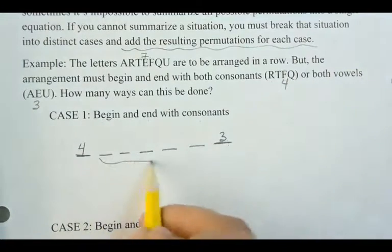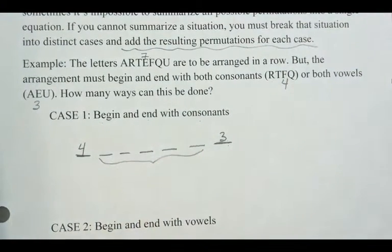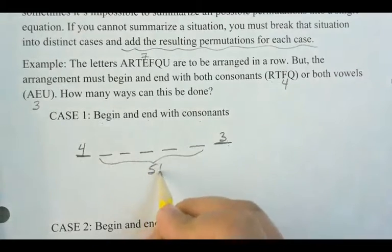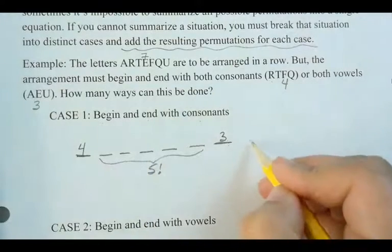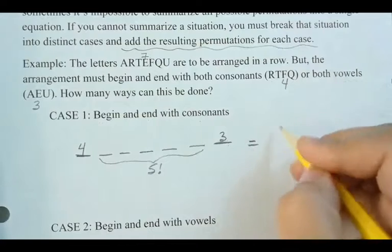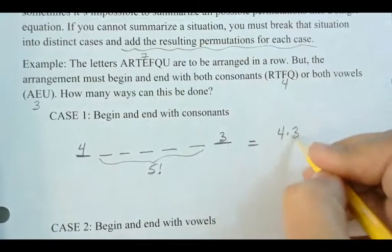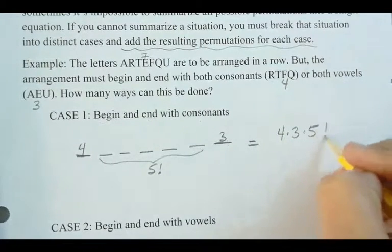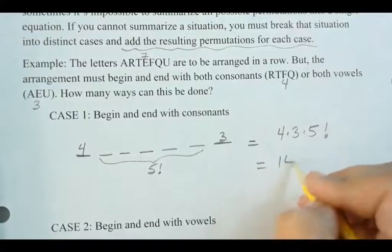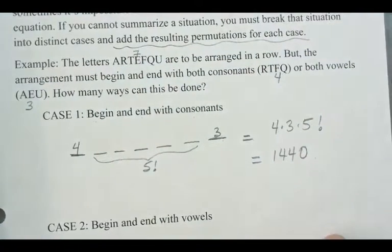Now, what is left for the middle here? There's five different letters left for the middle. So then this first case here is going to be four times three times five factorial, which is 1,440 different ways that I can arrange.